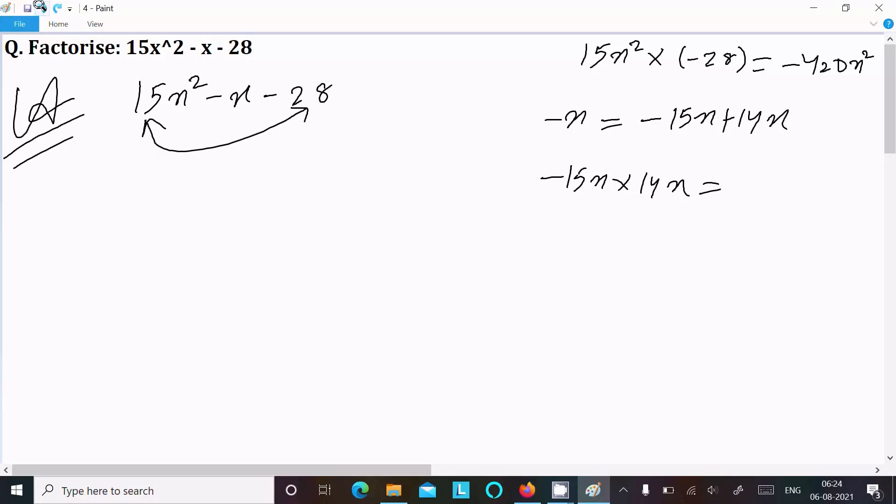So this time I'm going to try with -21x + 20x. If you subtract it equals -x, and -21x into 20x, when you multiply it comes -420x². So 420x² is same, so that we can take this combination.